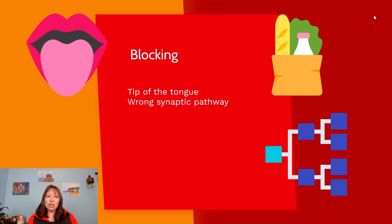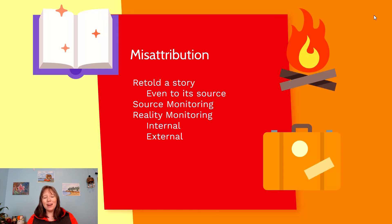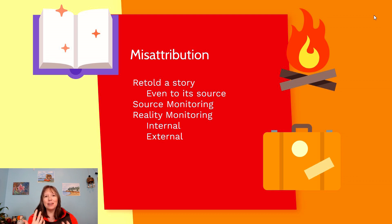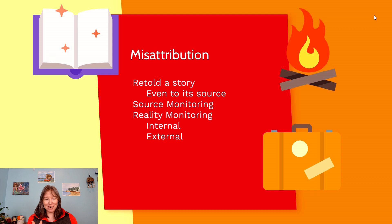Misattribution comes into play when you forget where you heard or learned information, or forget who you shared information with. This can happen when you go to tell someone a story and they say you've already told them that — you didn't realize you already shared it. Misattribution can also occur when you pass along information back to the person who originally gave it to you, which can be especially problematic if it was a secret you promised to keep.